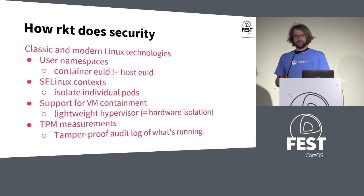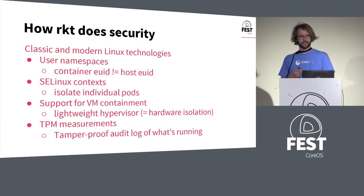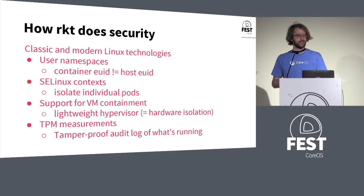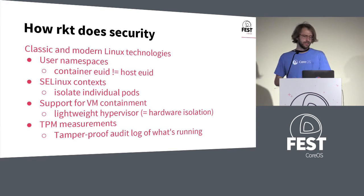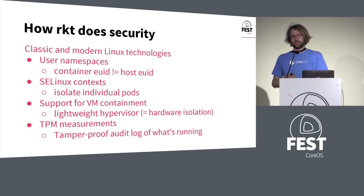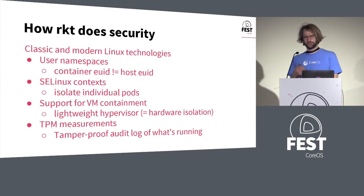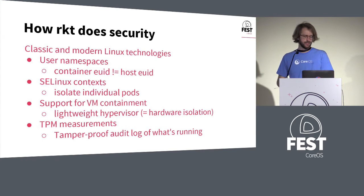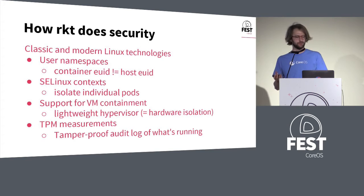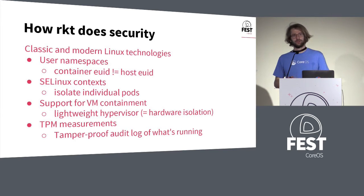Under the hood, that means we try to take advantage of as many technologies as we can. Rocket targets mostly Linux, so classic Linux container technologies like cgroups and namespaces, but also more modern technologies like user namespaces to separate the context of users on the host from users within containers. We integrate with things like SELinux, and we're working on AppArmor support to isolate individual pods on the system from each other. We have support in Rocket for using actual hardware virtualization using the KVM backend, which gives additional guarantees that the processor provides for isolation between processes. We also added support a few months ago for using the TPM — the trusted platform module on many modern Intel motherboards — to provide a tamper-proof audit log guaranteed by the hardware itself of what's running on the system.